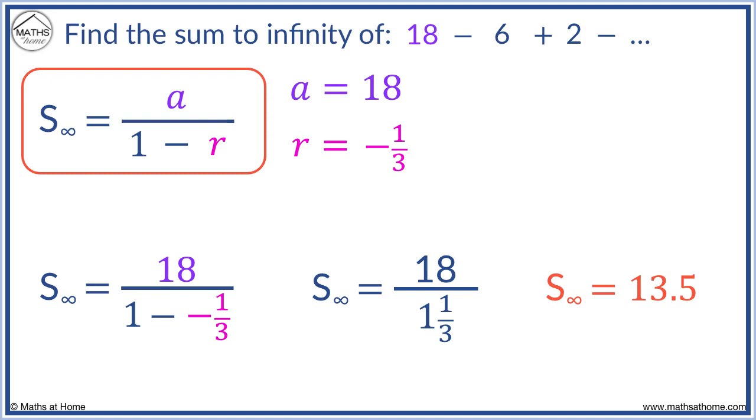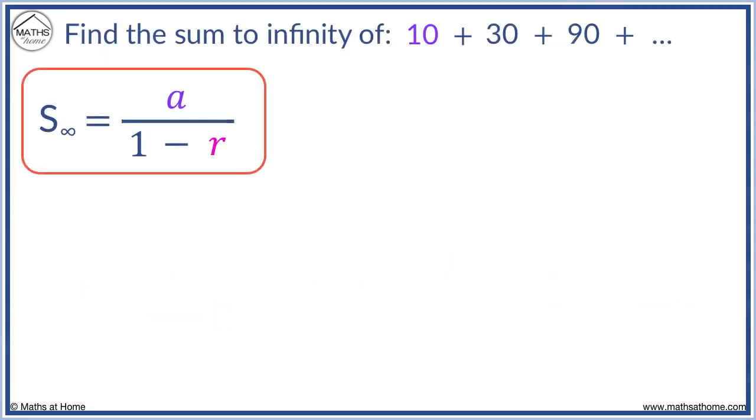Watch out for series in which the signs alternate between minus, plus, minus and so on, as this is a sign that r will be negative. In this question, a equals 10. r is found by dividing 30 by 10, we get 3.